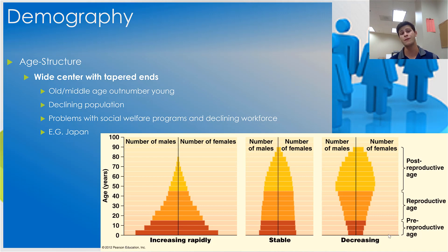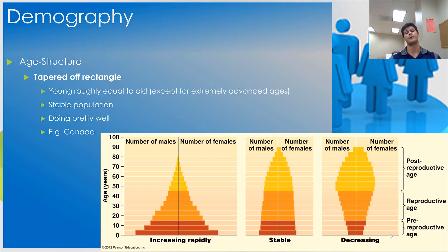A great case study for this shrinking age structure is Japan, which for a number of social reasons is having a very hard time getting its reproductive-age citizens to have children. That concludes our lecture on demography. I can't wait to continue the conversation in the next lecture on population dynamics — I'll see you then.